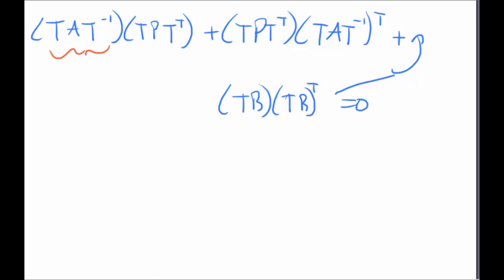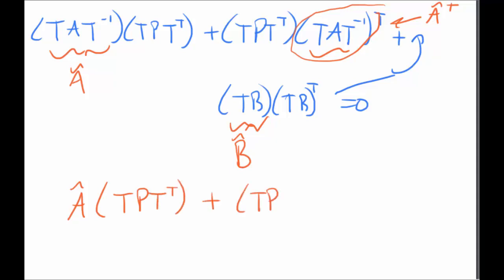So now we can see that the first part here is A hat and there's another A hat here, or A transpose if I take the whole lot. Then this is B hat. So we can rewrite the entire thing as A hat T P T transpose plus T P T transpose A hat transpose plus B hat B hat transpose. So that's the first part where we can see that T P T transpose is the new balanced controllability gramian P hat.